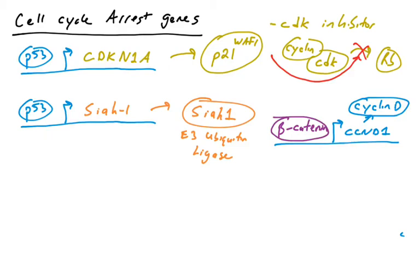So if p53 wants to halt the cell cycle, it will activate the SIAH1 gene. SIAH1 comes along and binds to beta-catenin, which is its substrate. SIAH1 attaches ubiquitins to its substrate beta-catenin, and beta-catenin is destroyed by the proteasome. And if that is the case, then beta-catenin will be unable to transactivate the cyclin D gene, and cyclin D levels can fall. So that is another way that p53 can control cyclins and CDKs by helping ubiquitinate the transcription factor that activates the cyclin D gene, one of them.